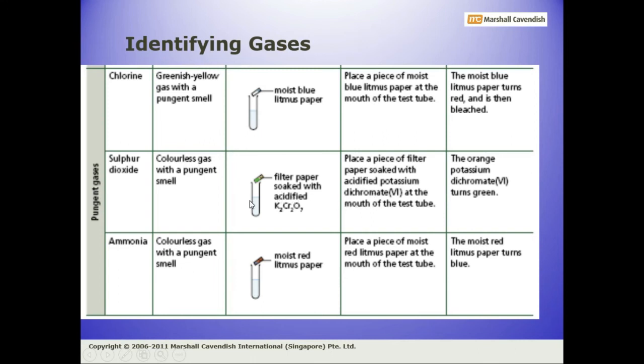In case of ammonia, place a piece of moist red litmus paper at the mouth of the test tube, and if the red litmus paper turns blue, it confirms the presence of ammonia.